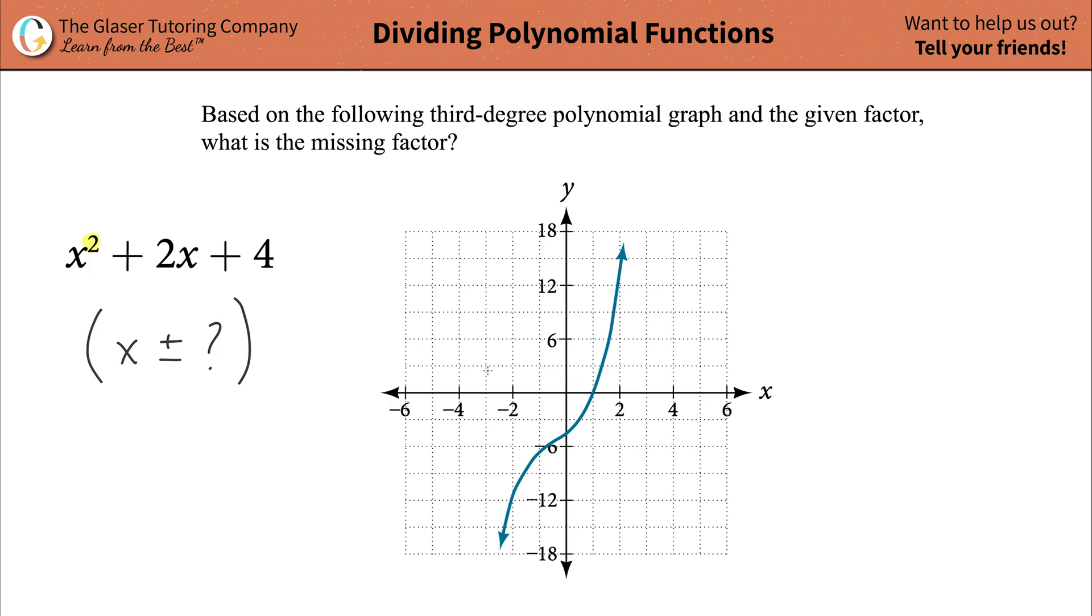So therefore, this graph should only now intersect the x-axis at one location. And therefore, this location of intersection will tell me now the value of my missing factor.